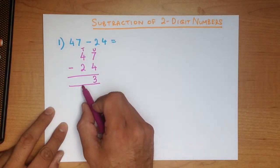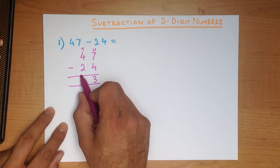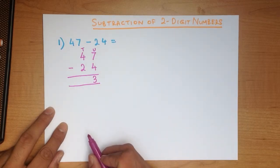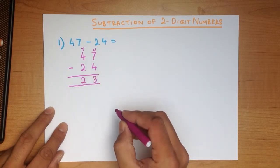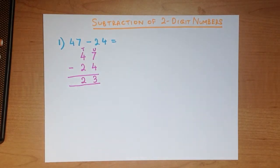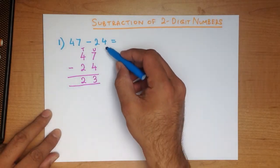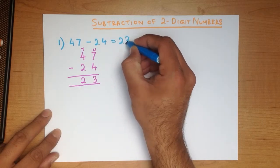Now we subtract the tens column. What is 4 minus 2? That's right, the answer is 2. And we have our answer — 47 minus 24 is 23.